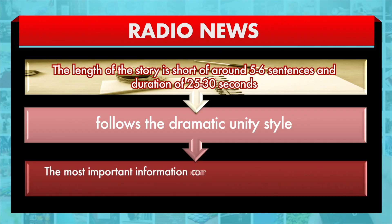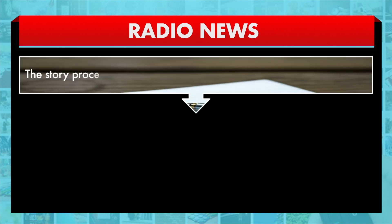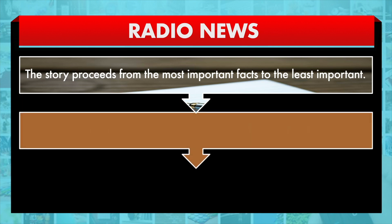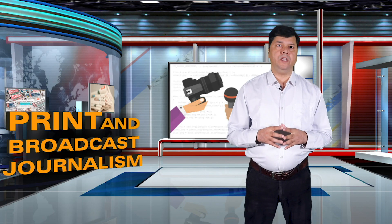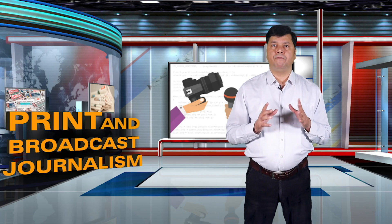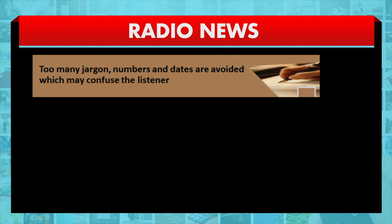The most important information comes first, followed by the current information, the background information and other related information. The story proceeds from the most important facts to the least important. The news story answers the 5W and 1H — that is what, why, who, where, when and how. The news story is brief, objective, and refrains from any comments or opinions. Too many figures, jargon, numbers and dates are avoided, as they may confuse the listener.